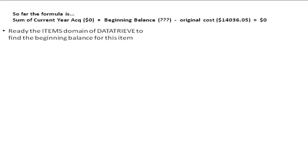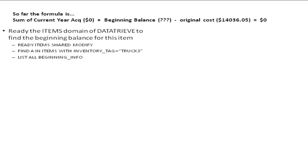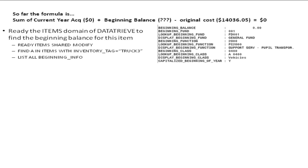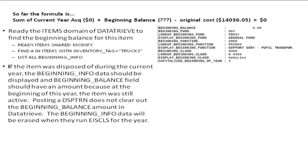We need to access the item's domain and data tree to verify the beginning balances for this item. Ready the item's domain and data tree, find the tag in question, ready items shared modify, find a collection in items with inventory tag equal to that inventory number, and list all beginning info. If the item was disposed of during the current year, the beginning info data should be displayed, and the beginning balance field should still have the amount, because at the beginning of the year this item was still active.